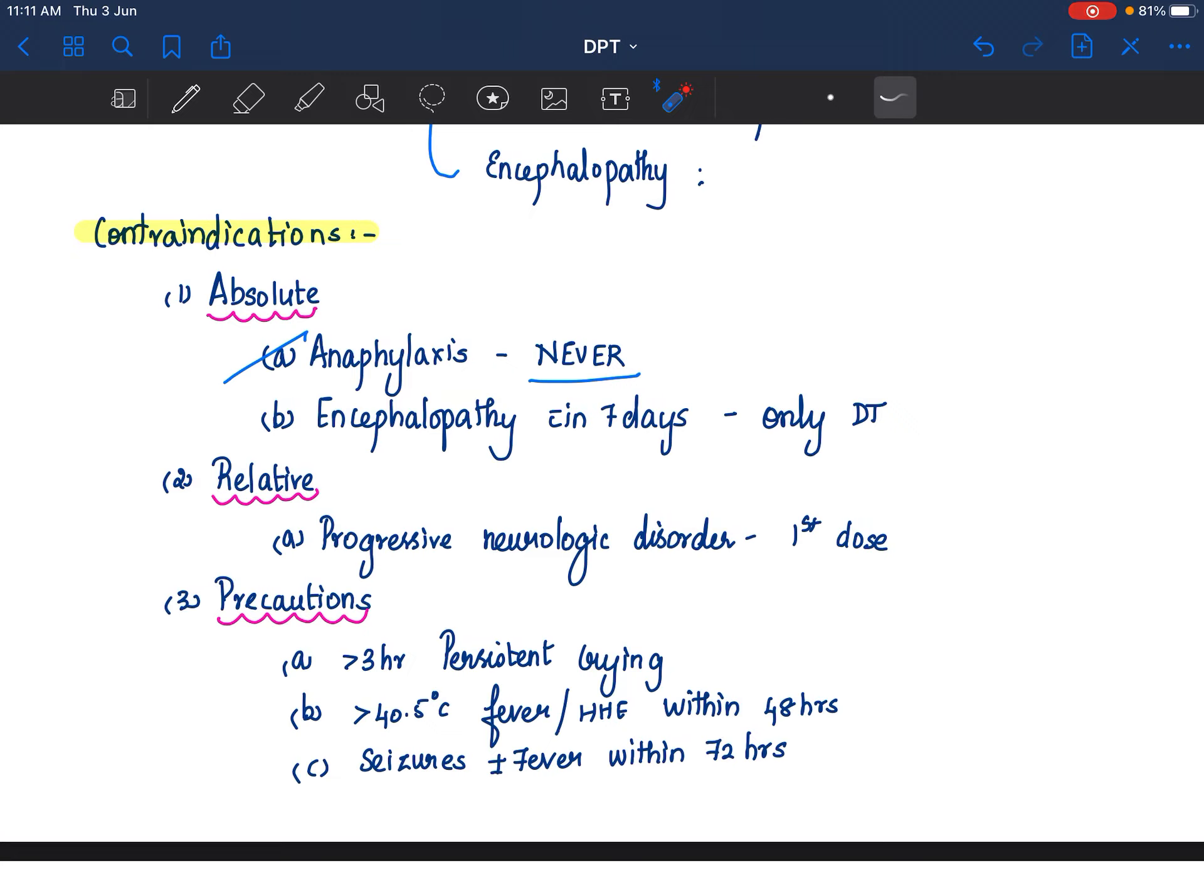Relative contraindications are a progressive neurological disorder, especially for the first dose. So that means if somebody is going to ask you, will you vaccinate a cerebral palsy child? Your answer should be yes. Basically, because cerebral palsy is a static encephalopathy.